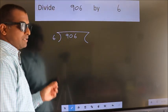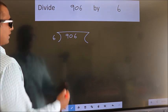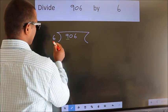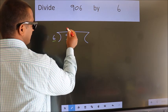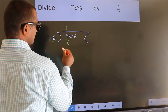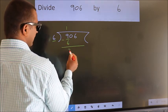This is step 1. Next, here we have 9, here 6. A number close to 9 in the 6 table is 6 once 6. Now we subtract. We get 3.